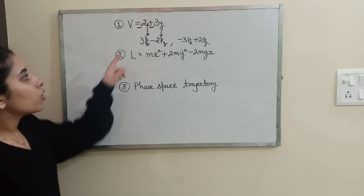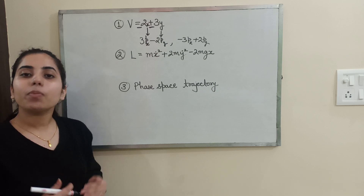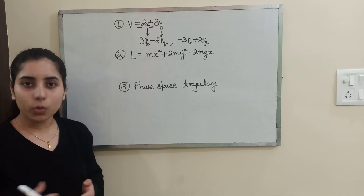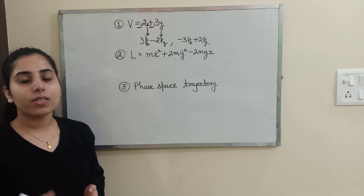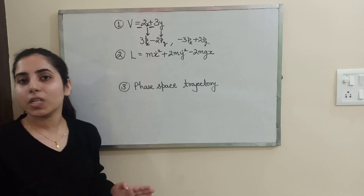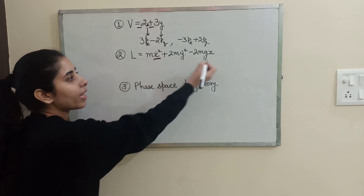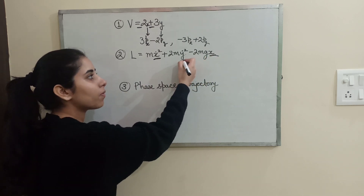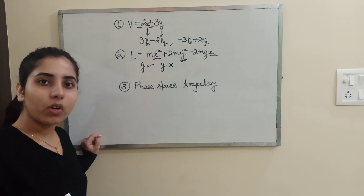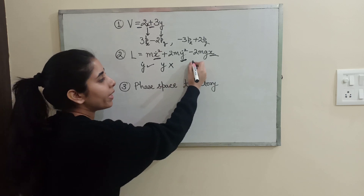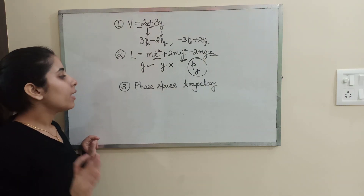The second trick: sometimes you are given a Lagrangian and asked which of the following is a conserved quantity. In this case, you check for the cyclic coordinate, also called the ignorable coordinate. A cyclic coordinate is one that does not appear in the Lagrangian — only its time derivative may appear. For example, if x and x-dot are both present, x is not cyclic. But if y is absent from the Lagrangian while y-dot is present, then y is cyclic, and the corresponding momentum Py is conserved.